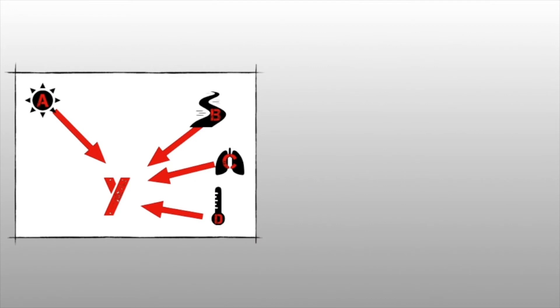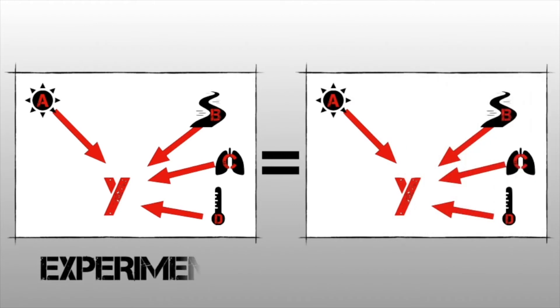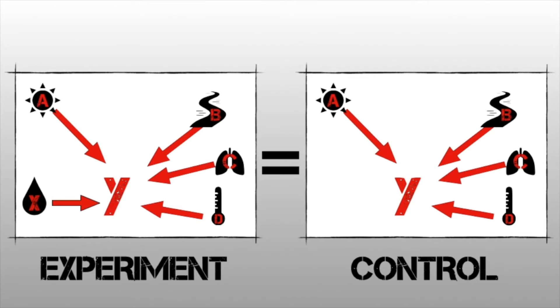So when you design your experiment, you need to first have something that you're going to compare it to, and we call that our control. So when you set up your experiment, you make your control identical in every way to your experiment, except for one thing, and that is your independent variable. You will see here that only the experiment has got the chemical x added to it.